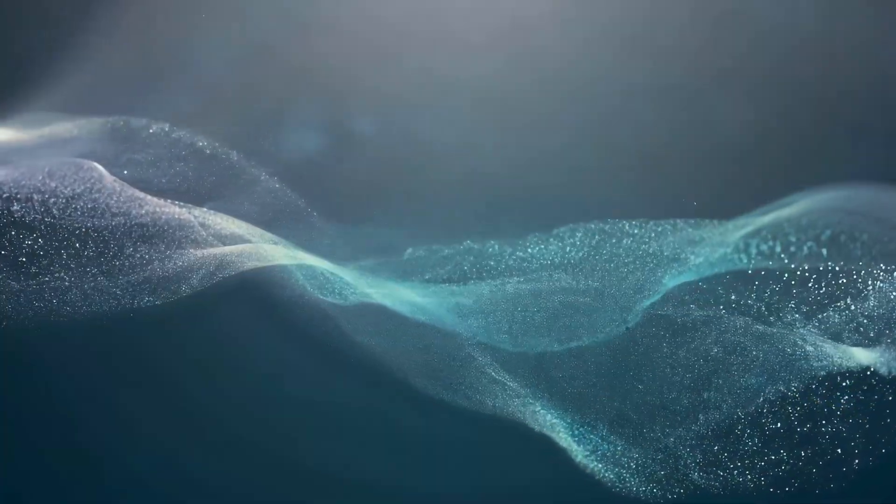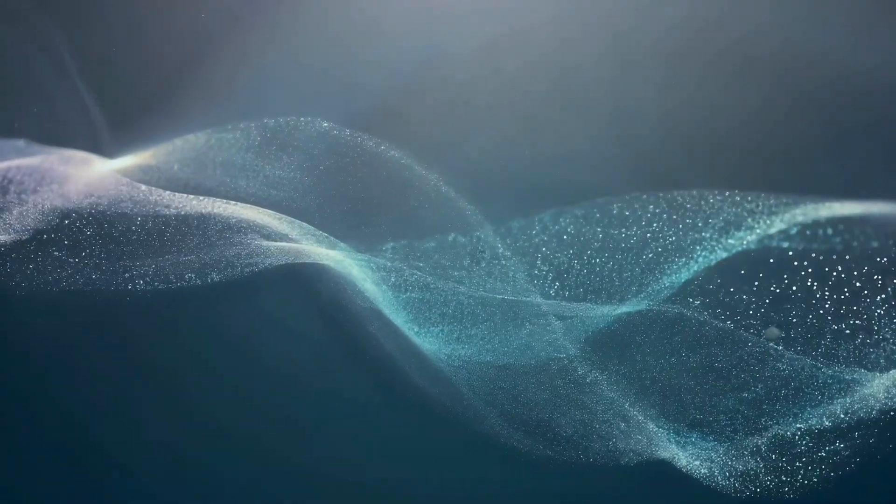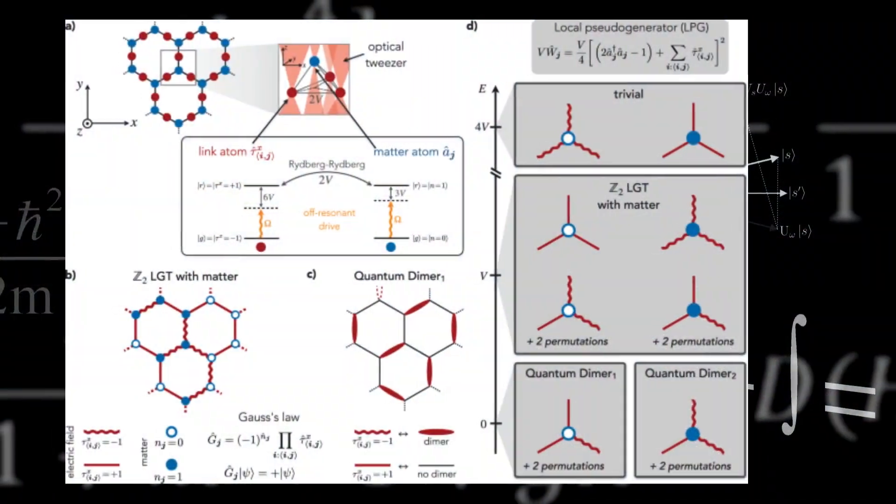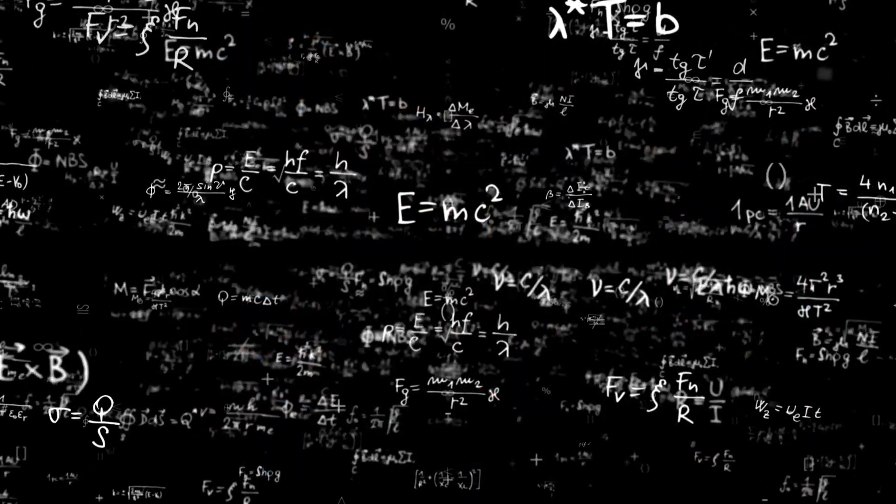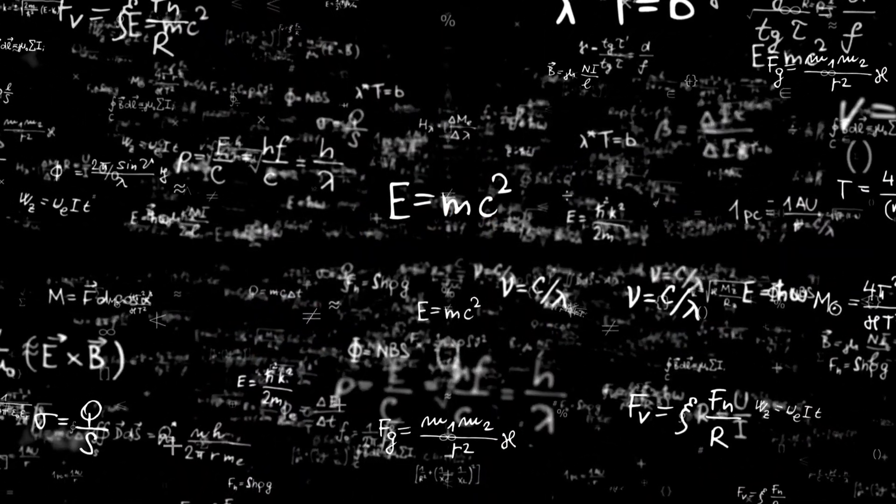No hidden messages here, just raw data confirming predictions from the standard model. Yet, as Kaku noted in his 2023 book Quantum Supremacy, when AI interprets these patterns, it feels like peering into the universe's source code, a poetic way to describe the elegant equations governing reality.